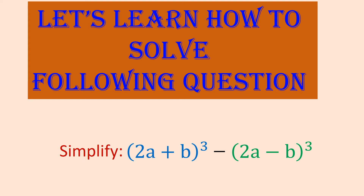Hello friends, let us learn how to solve the following question: (2a + b)³ minus (2a - b)³. In between the two brackets we have a minus sign, though it could be plus also. Whether it is plus or minus, it will be solved the same way. The only thing is, if there is a minus sign outside the bracket, while opening we change the sign inside. So let us see in detail.